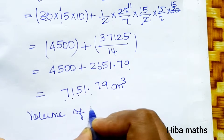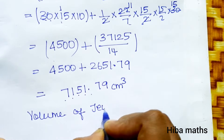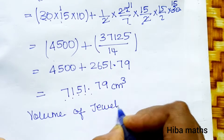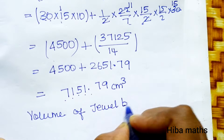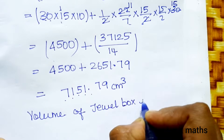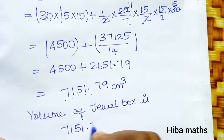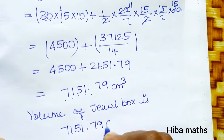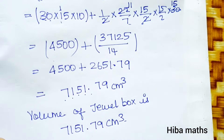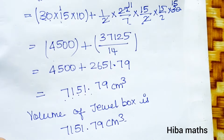The volume of the jewel box is 7151.79 cm³. If you have any doubt, please ask in the comment section. Thank you so much for watching.